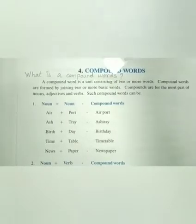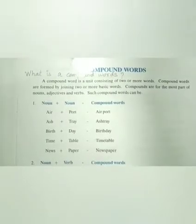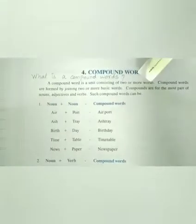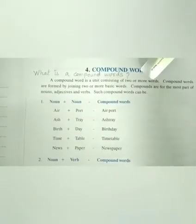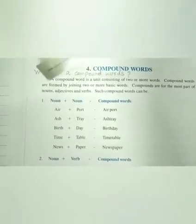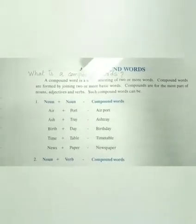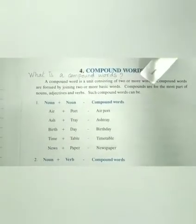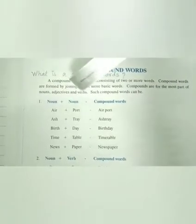What are compound words? A compound word is a unit consisting of two or more words. Compound words are formed by joining two or more basic words. Compound words are for the most part nouns, adjectives, and verbs.